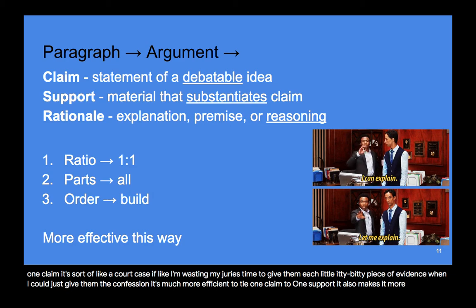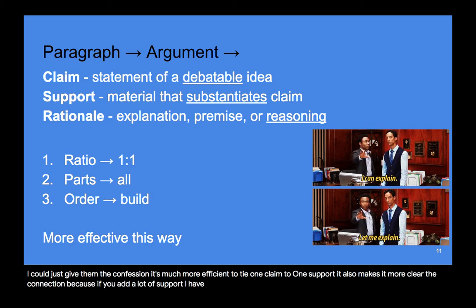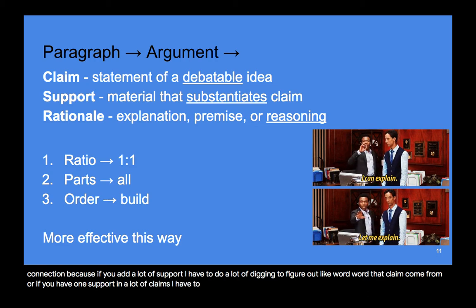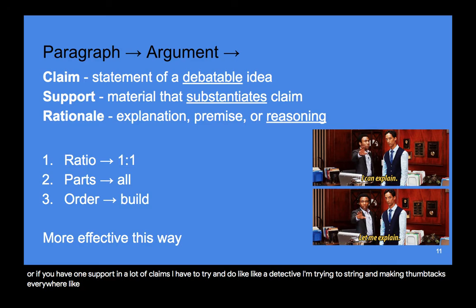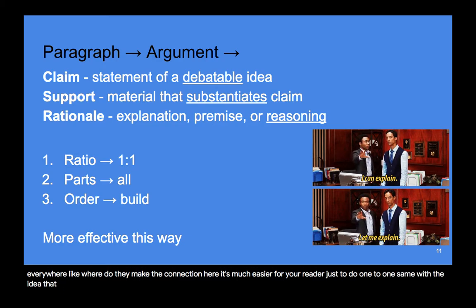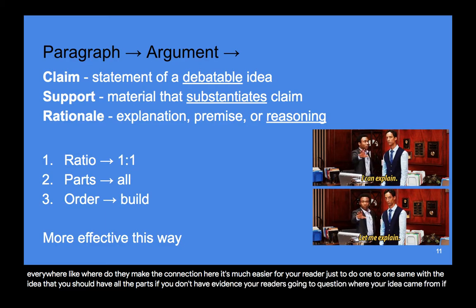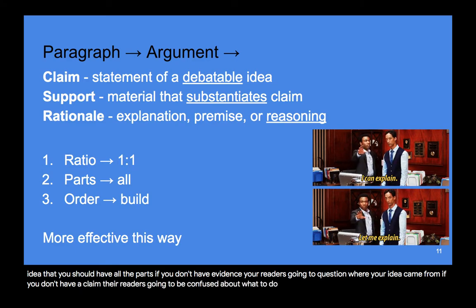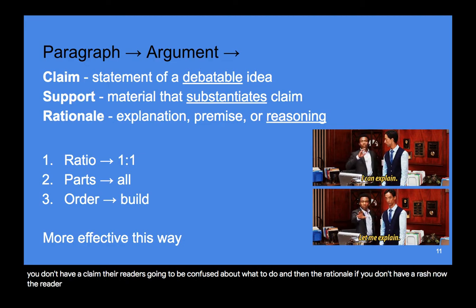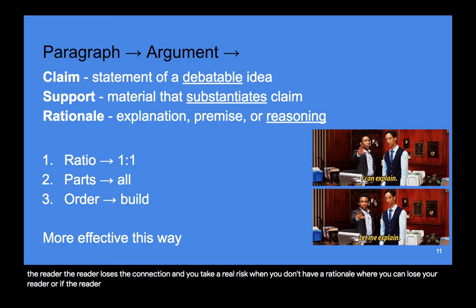It's also much clearer. If you add a lot of support, the reader has to dig to figure out where the claim came from. Or if you have one support and many claims, the reader has to diagram connections like a detective. It's much easier to do one-to-one. Similarly, you should have all the parts. Without evidence, the reader questions where your idea came from. Without a claim, the reader is confused about what to do. Without a rationale, the reader loses the connection and may interpret things differently — losing trust in you. So it's safer to have all the parts.